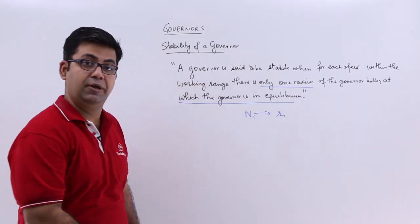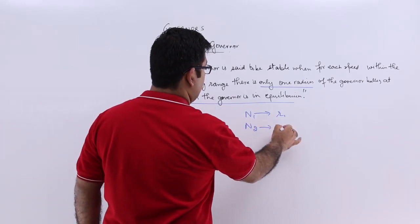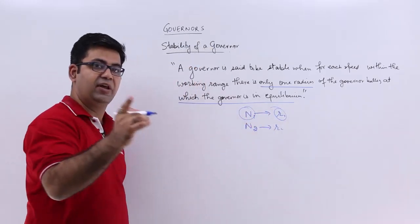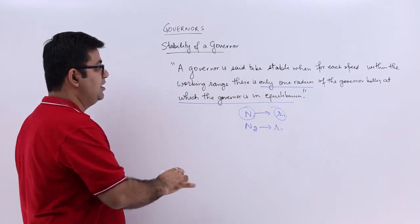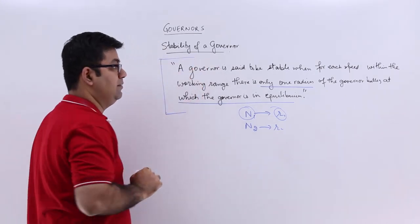So n1 has a radius r1 only, n2 will have a radius r2, and so on. For each speed you have just one value of radius of rotation. If this is existing, then your governor is said to be stable.